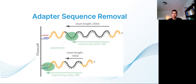However, in the bottom sequence, the insert length is less than the number of sequencing cycles. The read includes all 100 nucleotides of the fragment, but also contains the first 100 nucleotides of the adapter sequence.